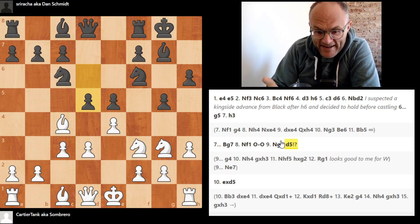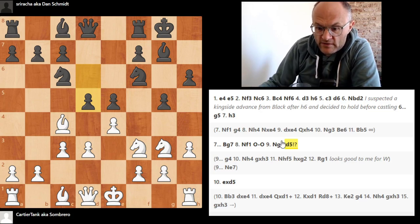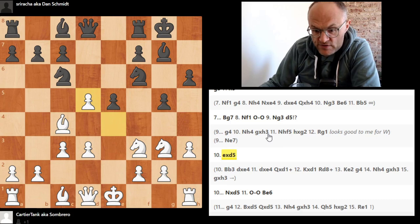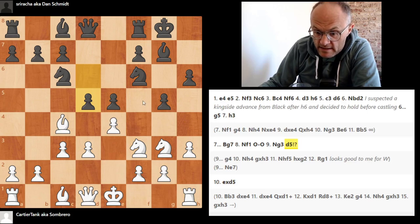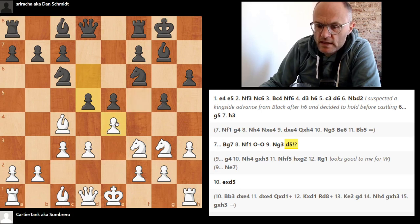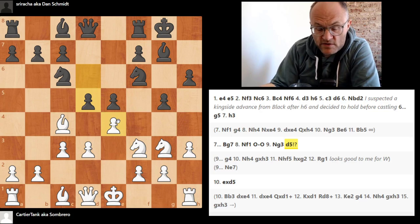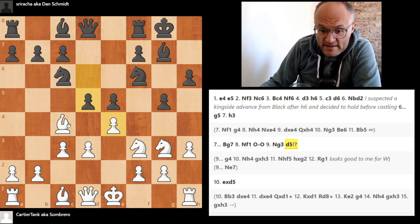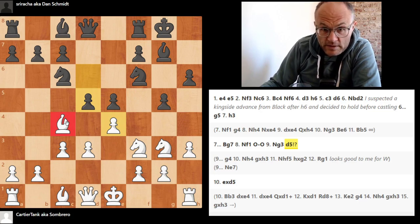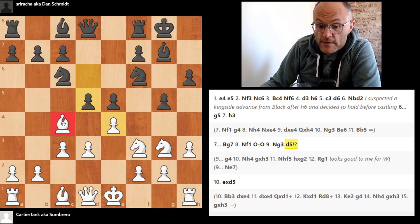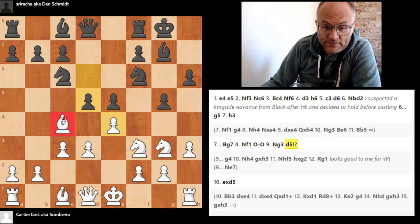So now white has a choice about how to deal with this. I really want to say that I'm not a great fan of what Sombrero did, e times d5. We'll see. It's going to be interesting, but I don't like it. And one of the main reasons I don't like it is it releases a lot of the pressure on the f5 square. Now, another thing about all of these positions in general that I waited until now to explain is this bishop, kind of like the London bishop, needs to make another move generally. You don't just get to put it out there on bishop c4 and get it to do its thing.